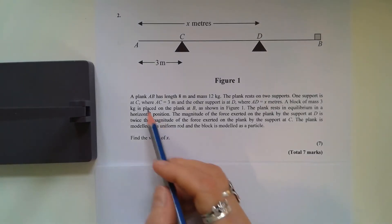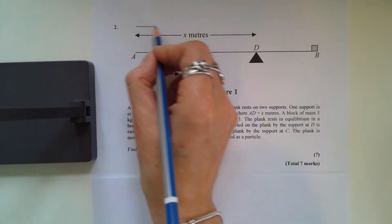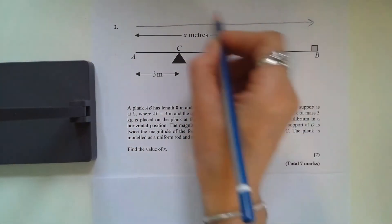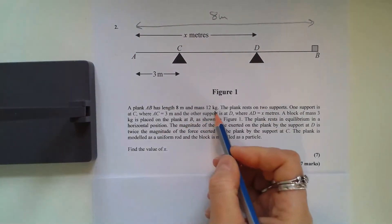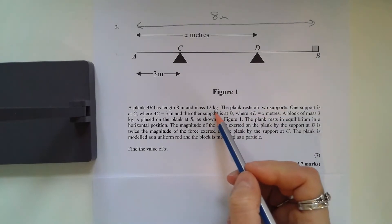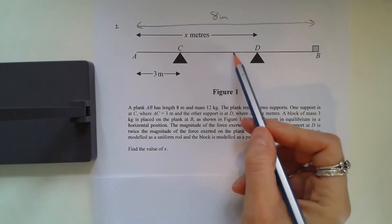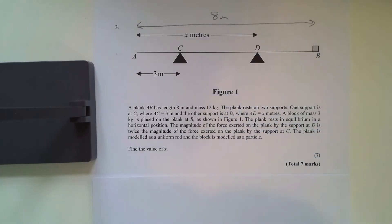Question 2: A plank AB of length 8 meters and mass 12 kilograms. Well, I don't know that it's uniform, so I don't know where the center of mass is, so I can't really mark the 12 kilograms. I'll just underline that for now.